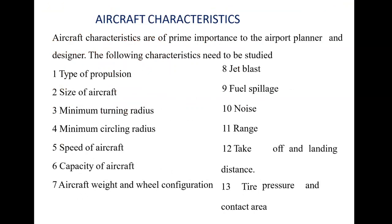We will now see the various aircraft characteristics. These are: type of propulsion, size of the aircraft, minimum turning radius, minimum circling radius, speed of the aircraft, capacity of the aircraft, aircraft weight and wheel configuration, jet blast, fuel spillage, noise, range, takeoff and landing distance, and tire pressure and contact area.